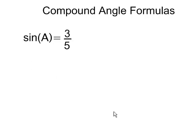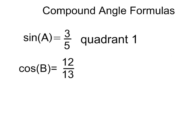I am told that sin A is equal to 3 fifths and that cos B is equal to 12 thirteenths. I'm told that the first angle, angle A, is in quadrant 1 and the second angle is also in quadrant 1.